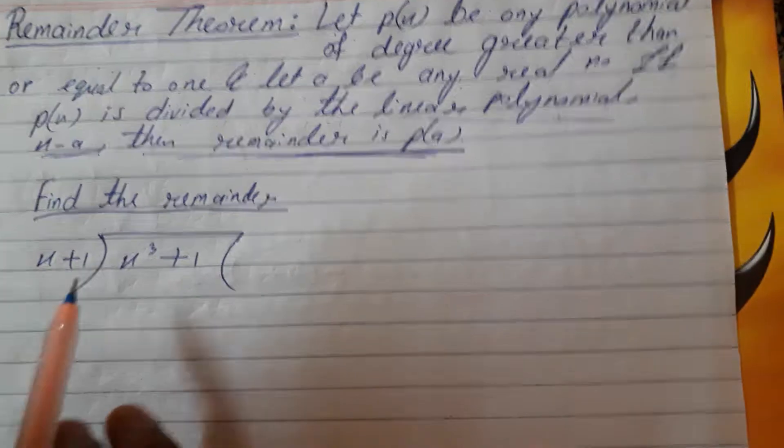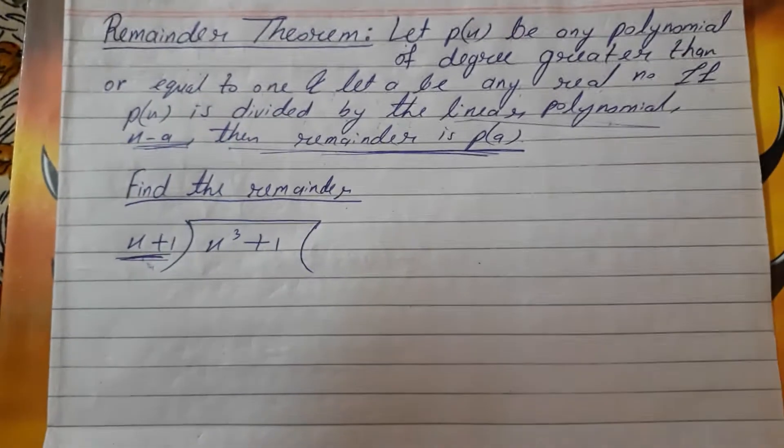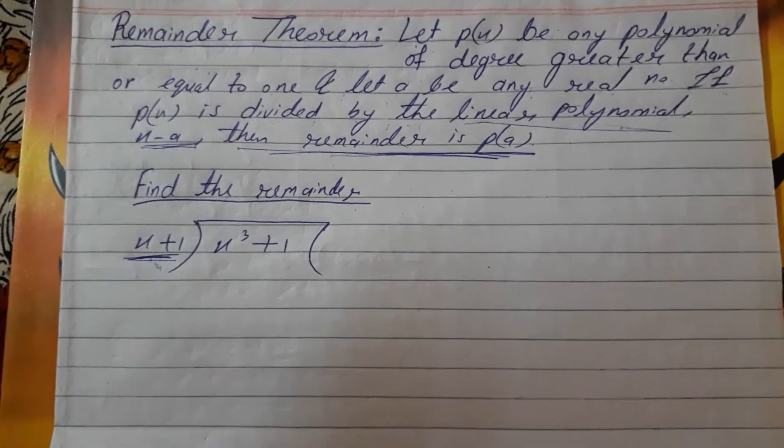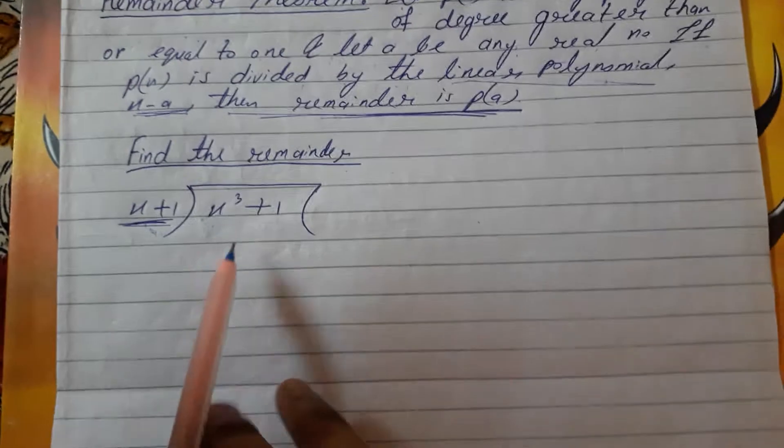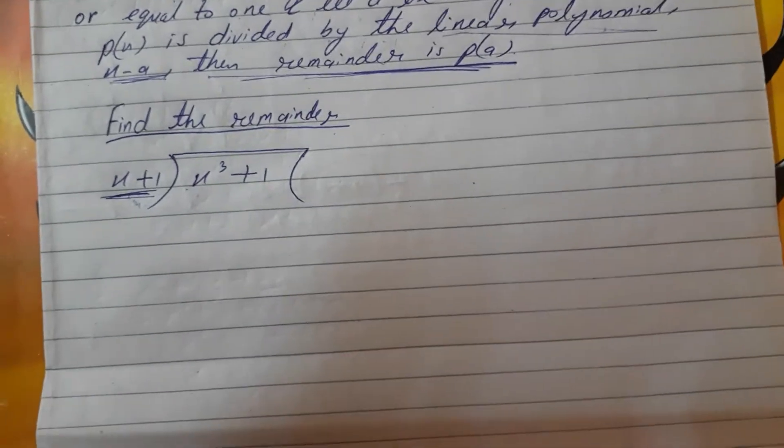See, here the divisor x plus 1 is given. So here, what is the value of x? x equals to minus 1. So if you write x, if you put minus 1 here, you can get the remainder easily without doing the actual long division method.